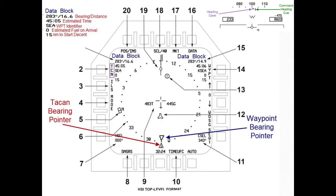Now we talked about course select — let's look at number 11. Number 11 has CSEL, course select. Essentially what that does is allow you to select a course that you wish to end on. In this case we're selecting a course of 343, indicating we want to end up on a bearing of 343. What will happen is the command heading Q in your HUD — that little vertical bar — will move on the magnetic heading scale. All you have to do is put your heading caret on top of the command heading Q and follow it, and it will bring you directly onto your course select of 343 degrees.